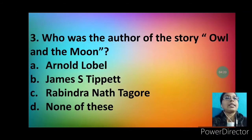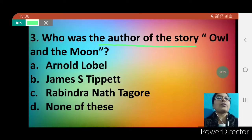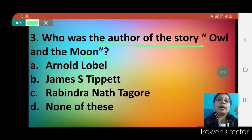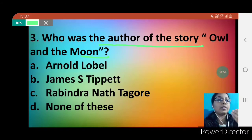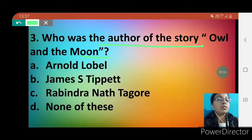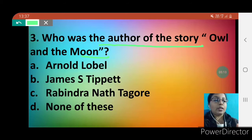Moving towards question number 3: who was the author of the story 'Owl and the Moon'? Option A is Arnold Lobel, option B is James S. Tippett, option C is Rabindranath Tagore, and option D is none of these. Arnold Lobel was born in California on 22nd May 1933 and was an American author of children's books.